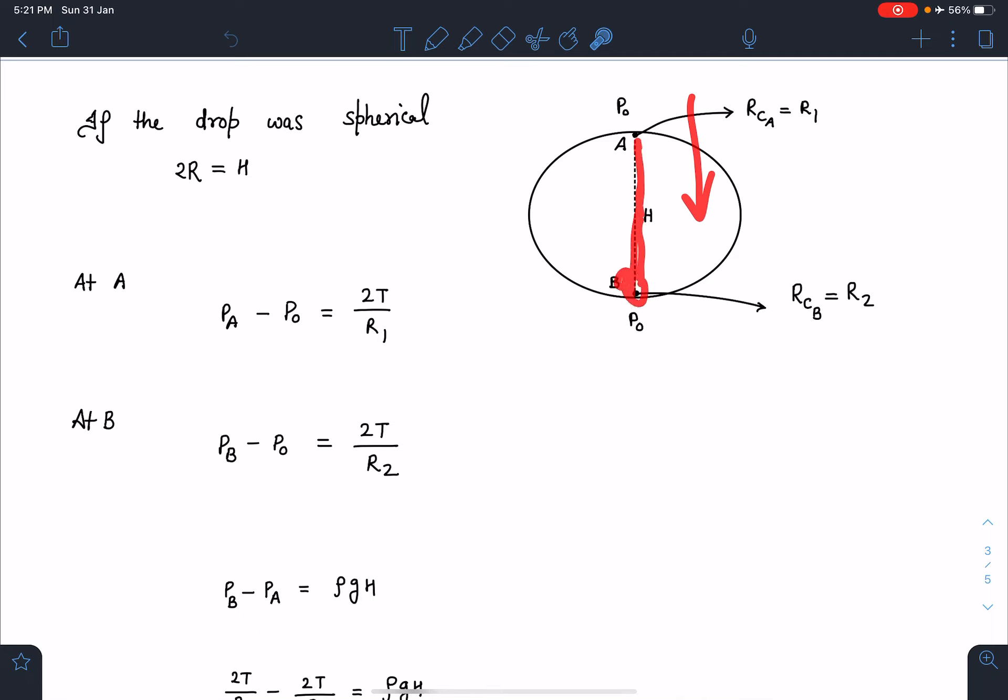We can conclude that pressure at B is going to be more because gravity is acting downward. If pressure at B is more, then from here we can comment that R2 will be less and R1 will be larger. So the shape will be somewhat like this if it is existing in reality. Anyways, we are not interested in that part.